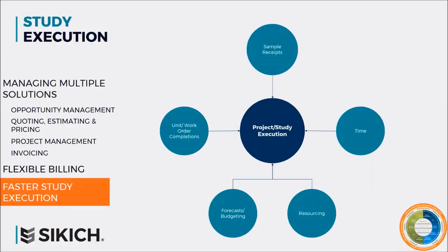The last topic is faster study execution — where do we see efficiencies within operations? The first area is sample receipts or inventory management, often dictated by whether the organization is preclinical or clinical. We have the ability to tie receipts to projects, giving a holistic view of what materials are being used, how much has been used, and what remains. We can track attributes such as lot number, serial number, and freezer management, as well as inventory movements or transfers between projects.